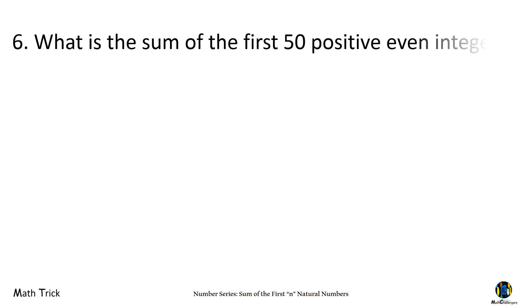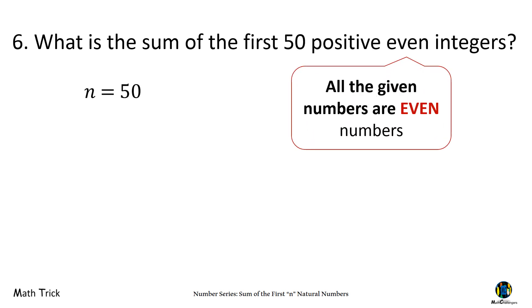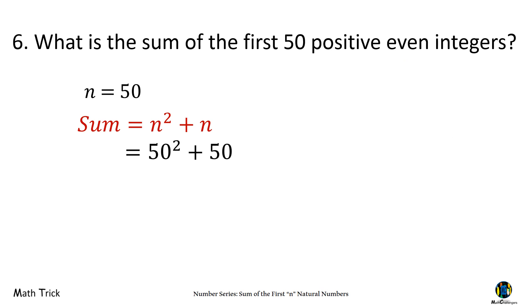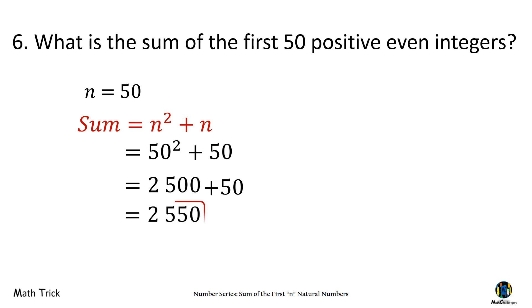What is the sum of the first 50 positive even integers? The number of terms is 50. Since all the given numbers are even, we use: N squared plus N. 50 squared plus 50 equals 2,500 plus 50, which is 2,550. The sum of the first 50 positive even integers is 2,550.